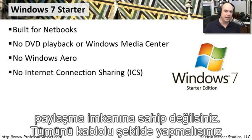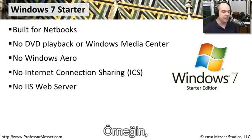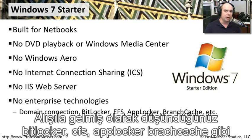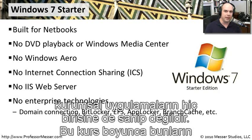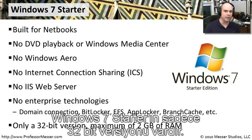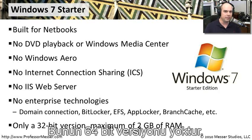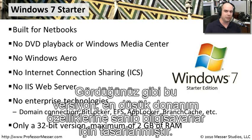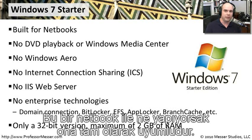Windows 7 Starter won't be used to hop onto a wireless network and share a wired internet connection. There's no web server and none of the enterprise technologies like BitLocker, EFS, AppLocker, or other enterprise functions covered in this course. There is only a 32-bit version of Windows 7 Starter — no 64-bit — and it cannot use more than 2 GB of RAM. It's really designed for a bare minimum system, fitting perfectly for netbooks.